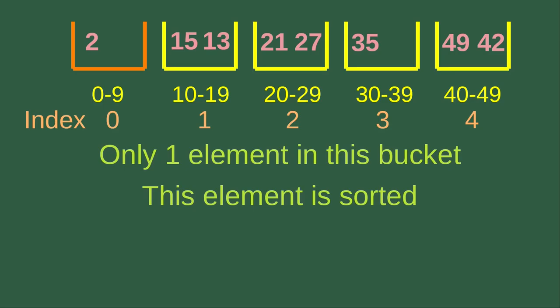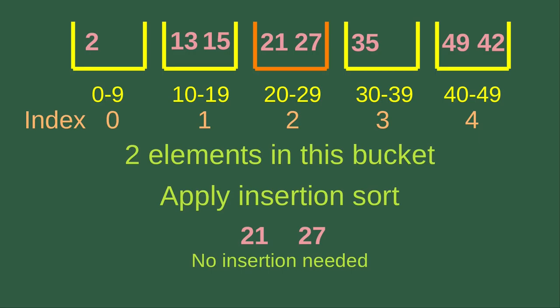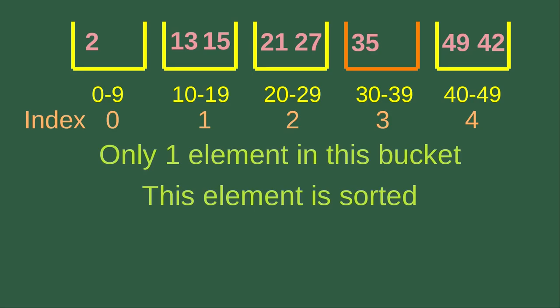Now we sort the elements in each bucket. For bucket index 0, there is only one element, so it is already sorted. For bucket index 1, there are two elements, and we apply insertion sort: 13 is smaller than 15, so 13 comes before 15. For bucket index 2, which stores 21 and 27, 27 is already larger than 21, so no insertion sort is needed.